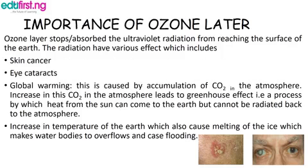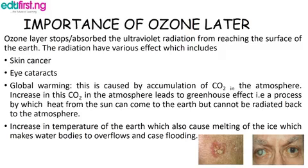The importance of the ozone layer: the ozone layer stops and absorbs ultraviolet radiation from reaching the surface of the earth. The radiation has various effects which include, number one, skin cancer. It also causes eye cataracts. It also causes global warming, and this is caused by accumulation of carbon dioxide in the atmosphere. An increase in carbon dioxide in the atmosphere leads to a process called the greenhouse effect — a process by which heat from the sun can reach the surface of the earth but cannot be radiated back to the atmosphere — increasing the temperature of the earth, which will also lead to melting of ice, causing water bodies to overflow and cause flooding.